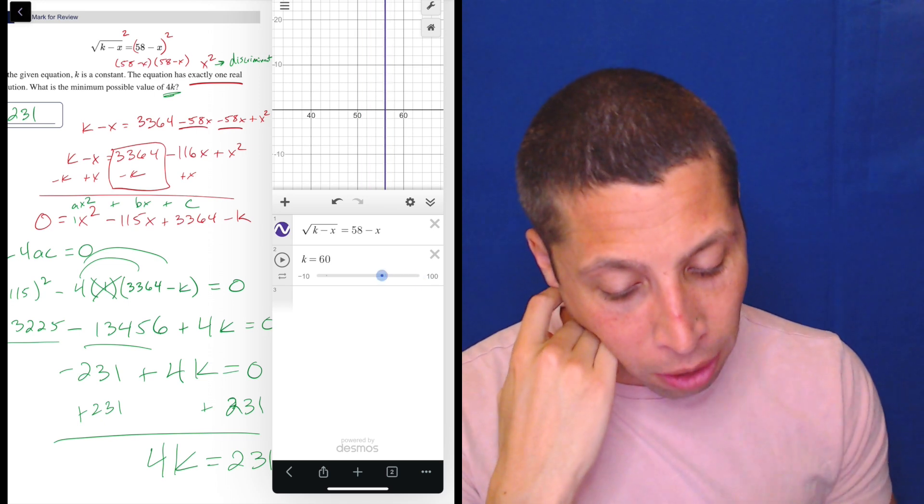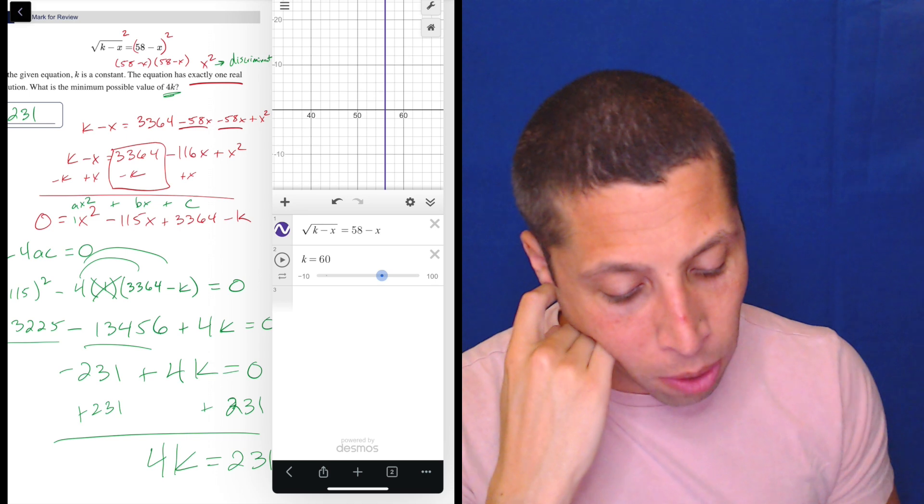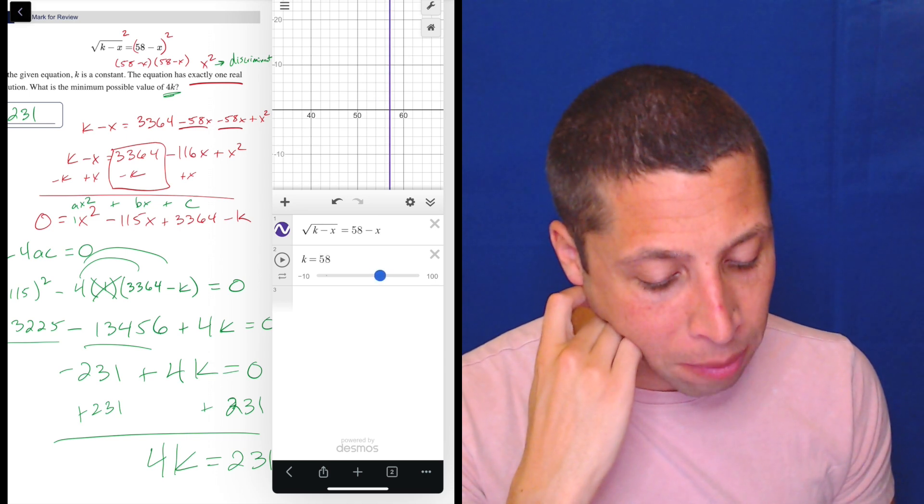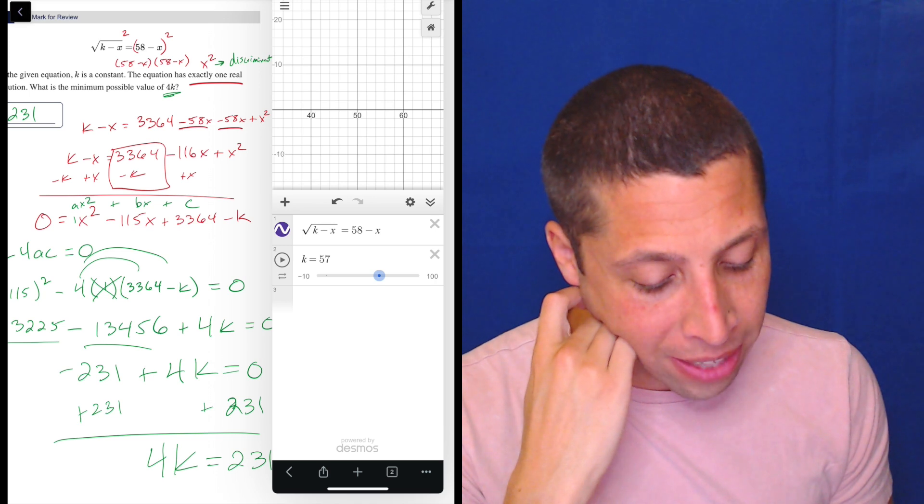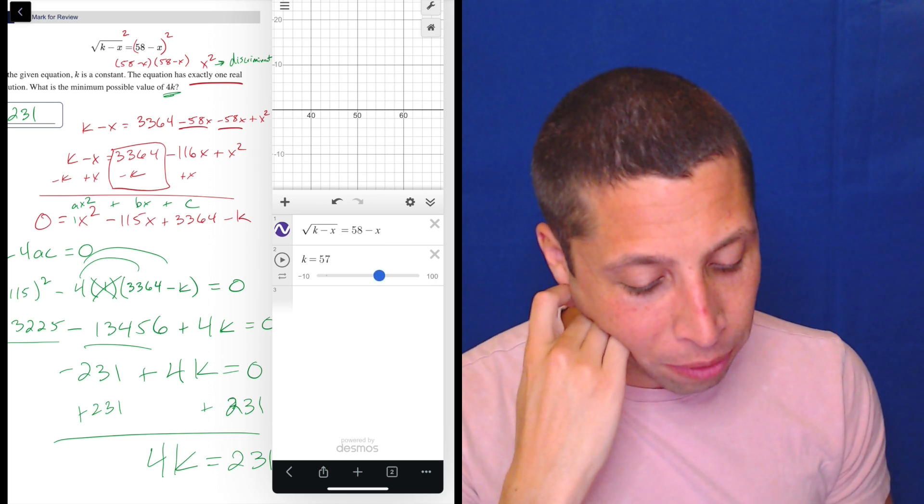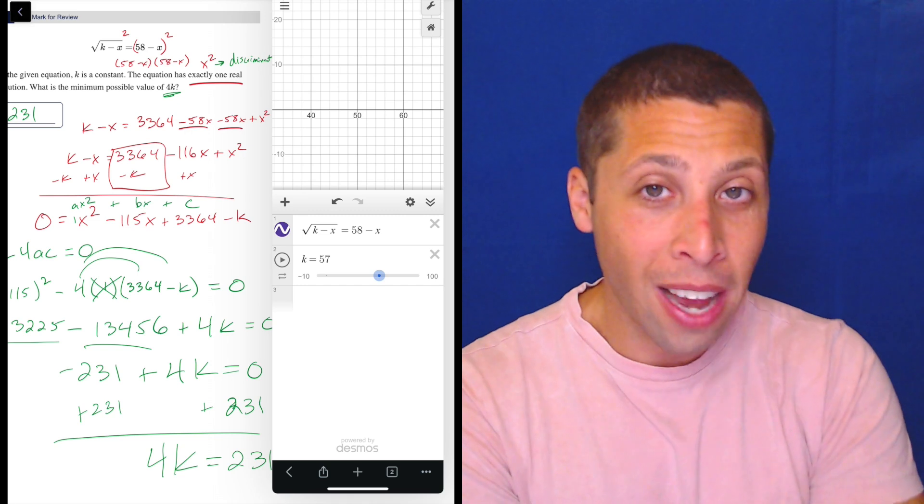So the point is, I'd be looking, all right, I want one real solution. I want to see where that disappears, right? So that vertical line is my solution. And if I go to 57, it's gone. But if I go to 58, it's there.